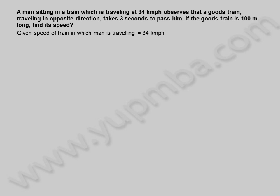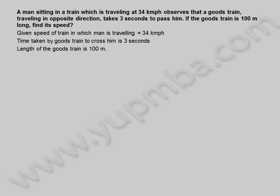Given: speed of train in which man is traveling is equal to 34 km per hour. Time taken by goods train to cross him is 3 seconds. Length of the goods train is 100 meters.